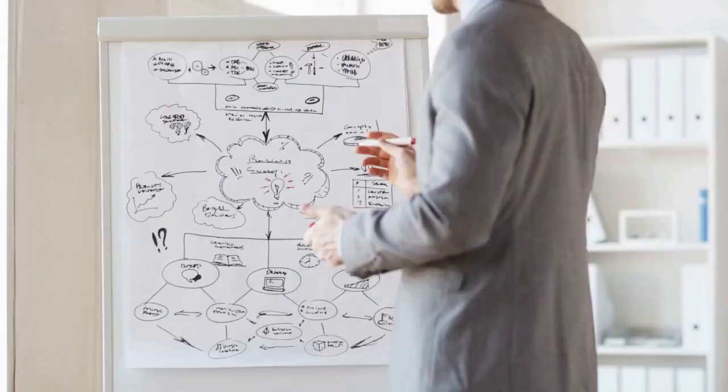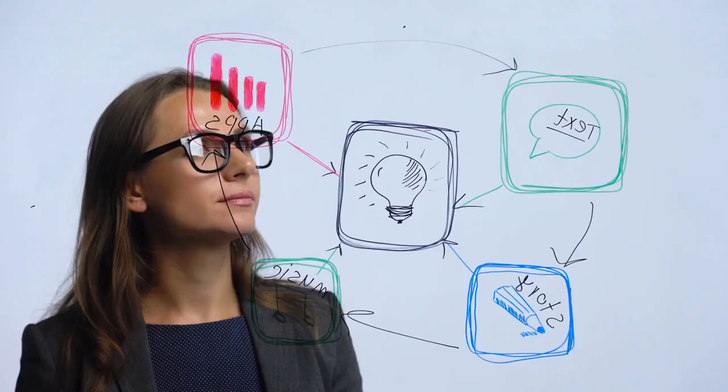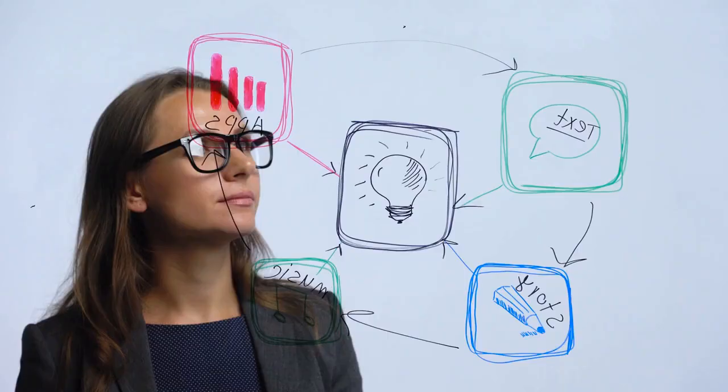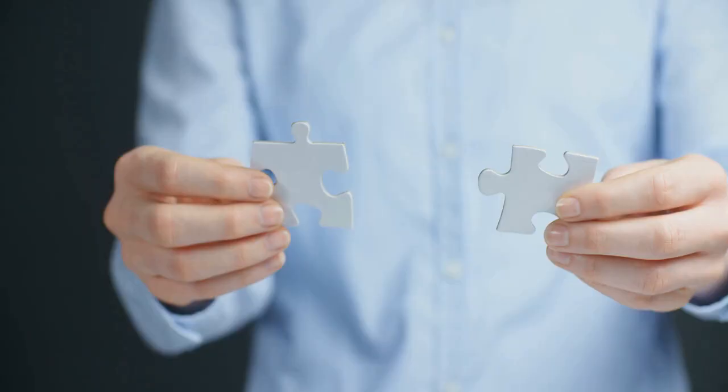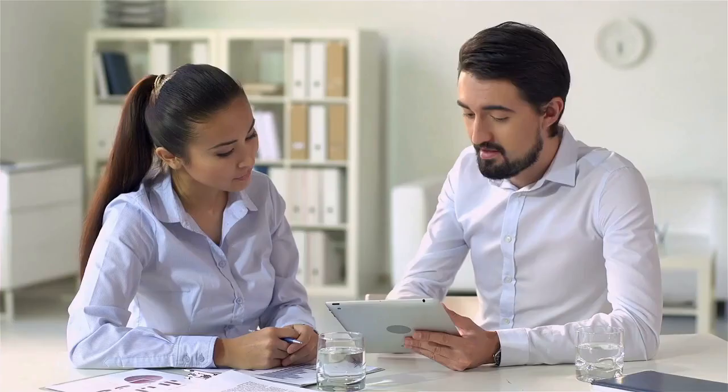How does creativity help in problem solving? Problem solving is about coming up with a plan or strategy that works. It requires us to think logically, analytically, and creatively to come up with practical solutions to a problem. While logic is essential, creativity allows us to look at a problem from different angles. By using our creativity, we can generate ideas that others might not have thought of.